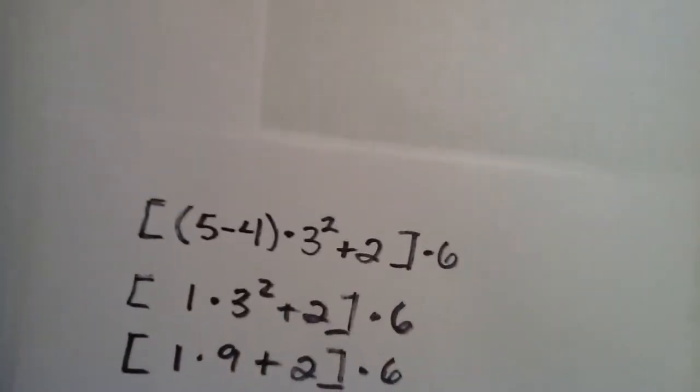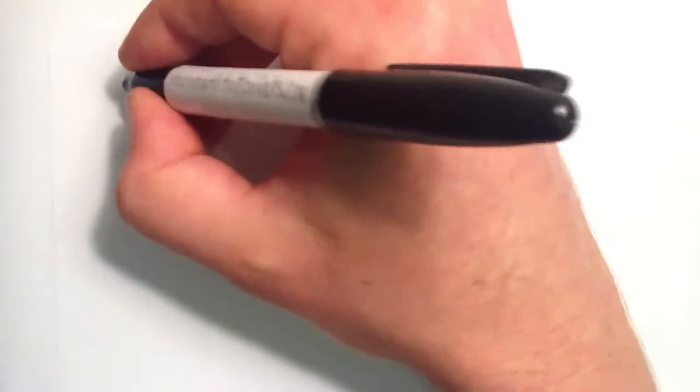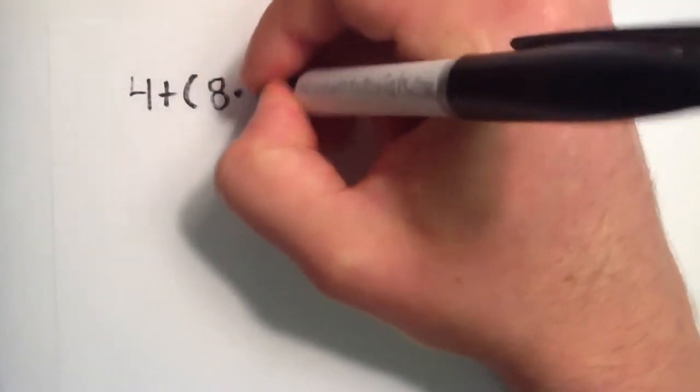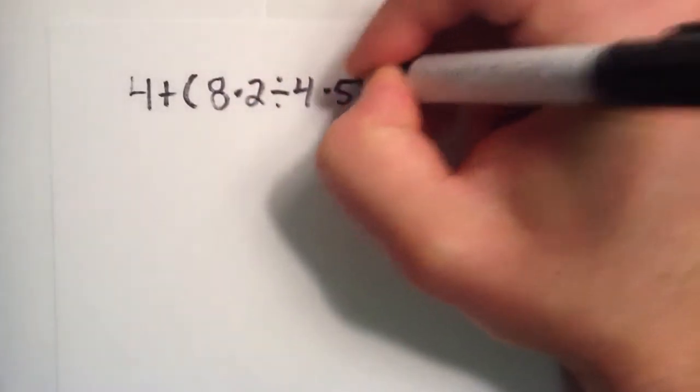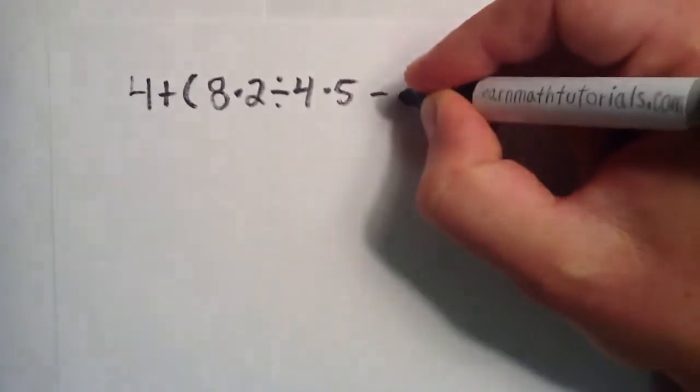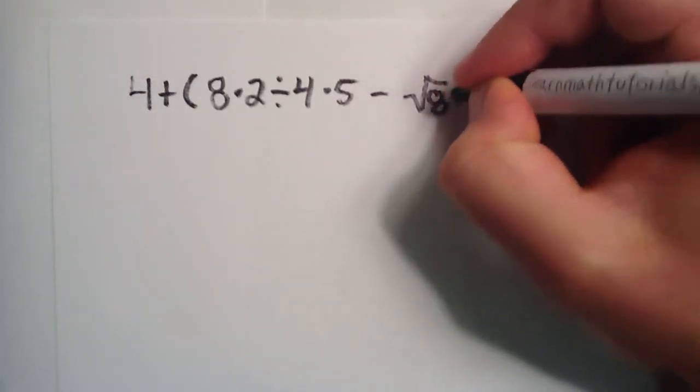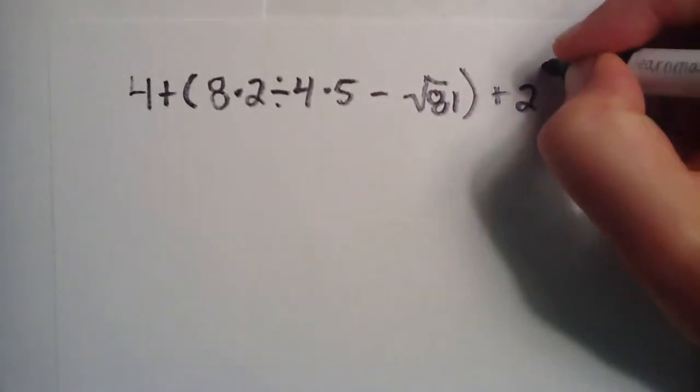So let's take a look at another example. Let's do 4 plus, and then we'll do parentheses, 8 times 2, and then we'll divide that by 4 times 5, and we'll subtract square root 81. And then we'll go ahead and add 2 to the third to that.